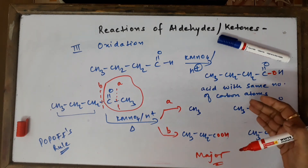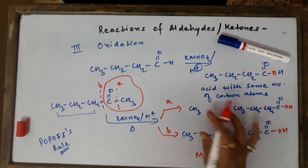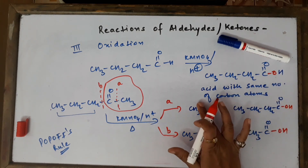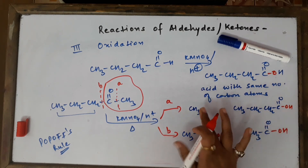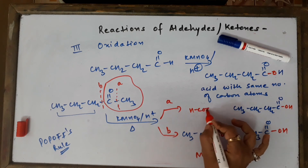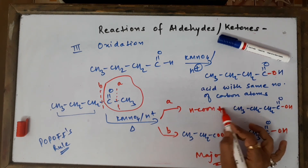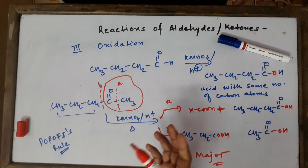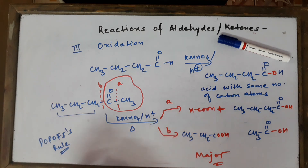Pathway A gives the minor products. For the minor products, add OH and convert the one-carbon fragment — which is a methyl group — into a one-carbon acid, which is methanoic acid (HCOOH). So the minor products include methanoic acid along with the larger carboxylic acid fragment.